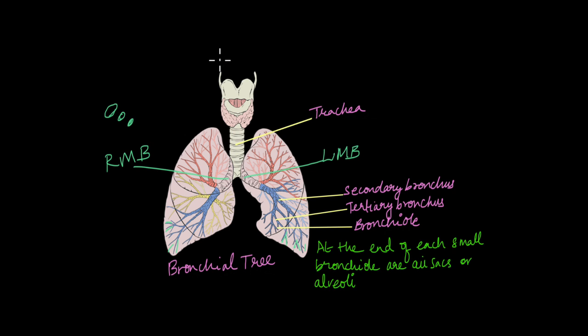The parts of the respiratory system till the bronchi, till the tertiary bronchi make up the conducting zone of the respiratory system. In the conducting zone, no gas exchange takes place.